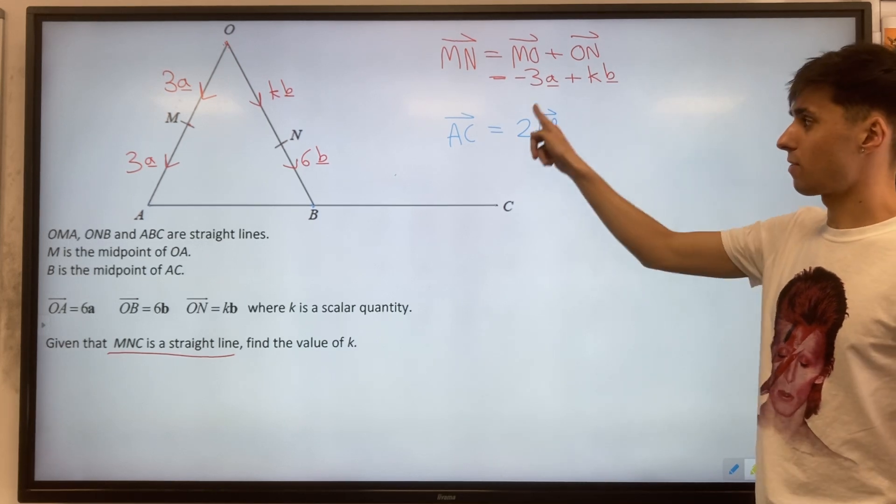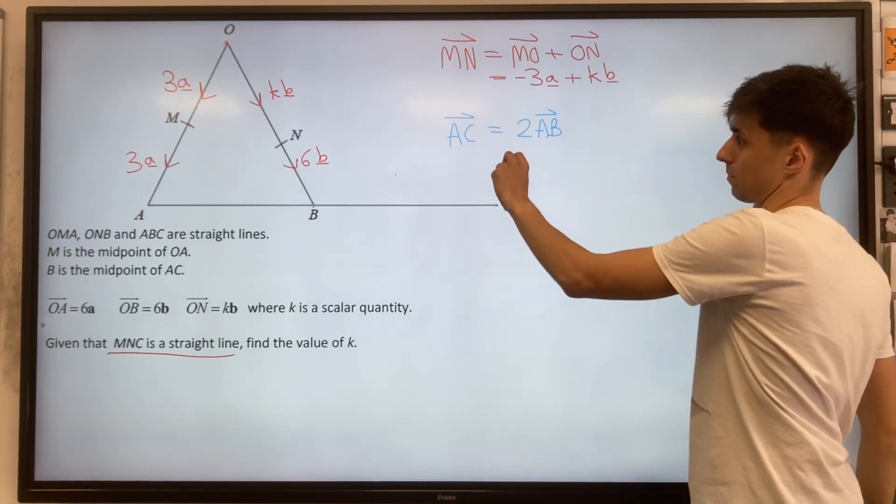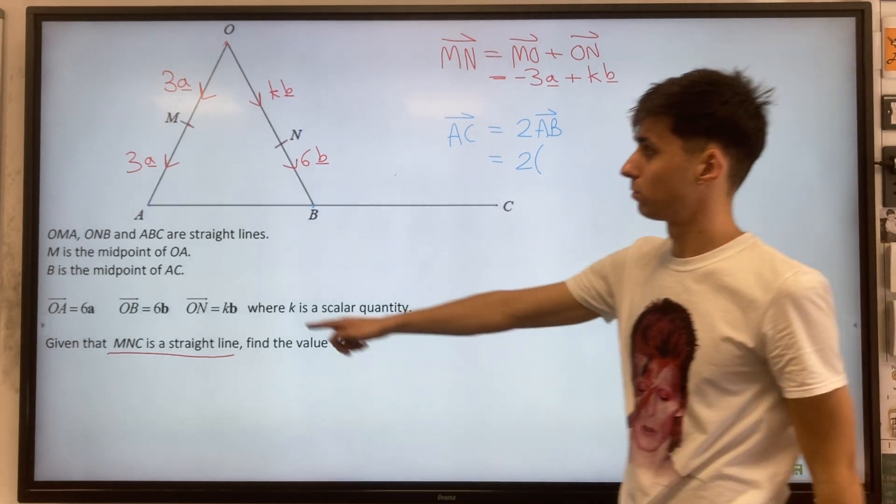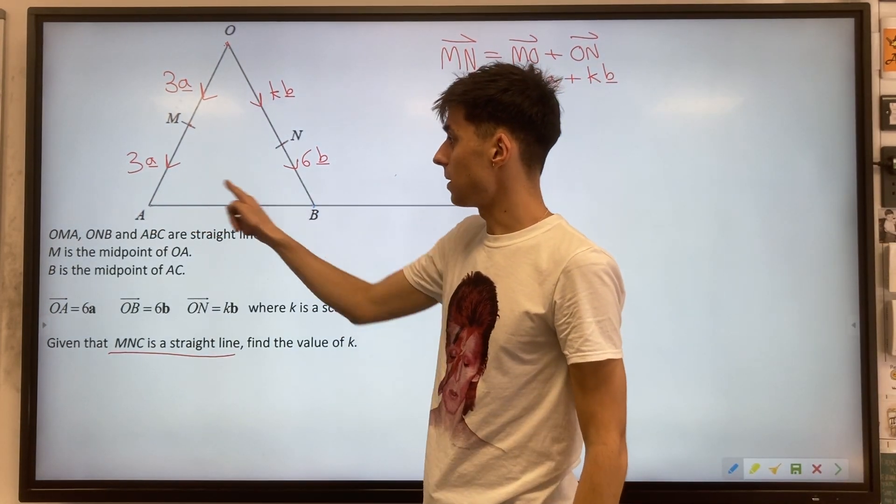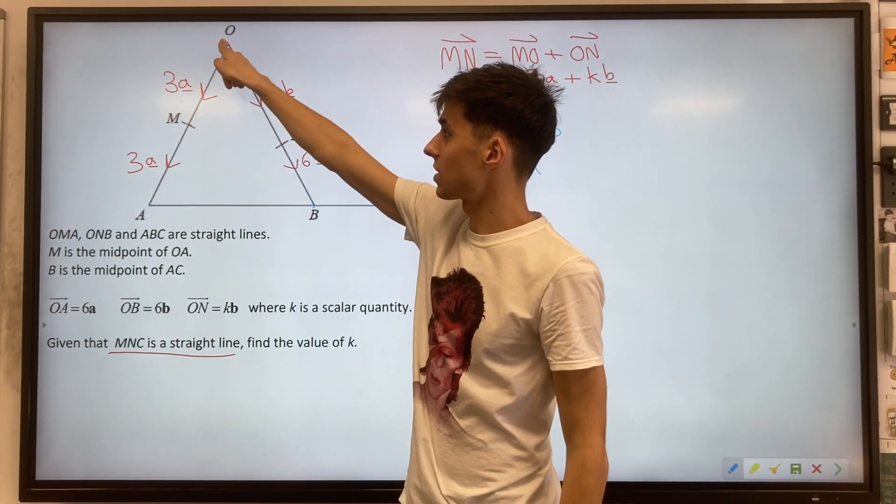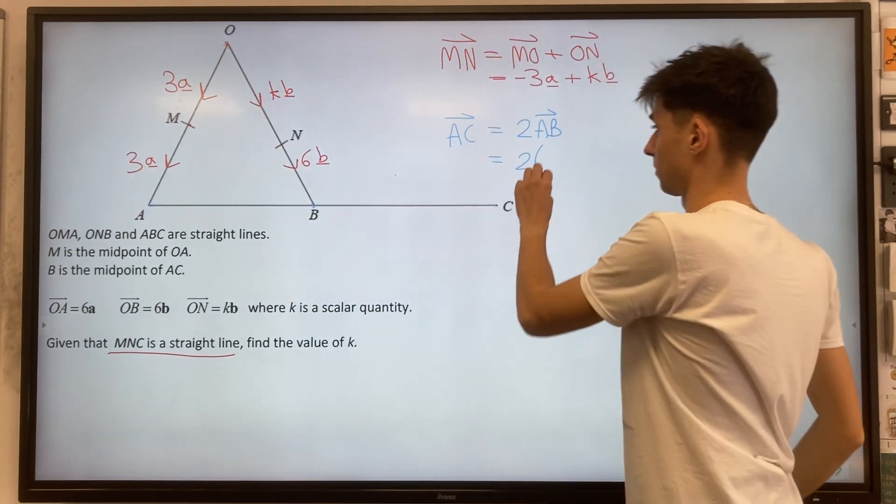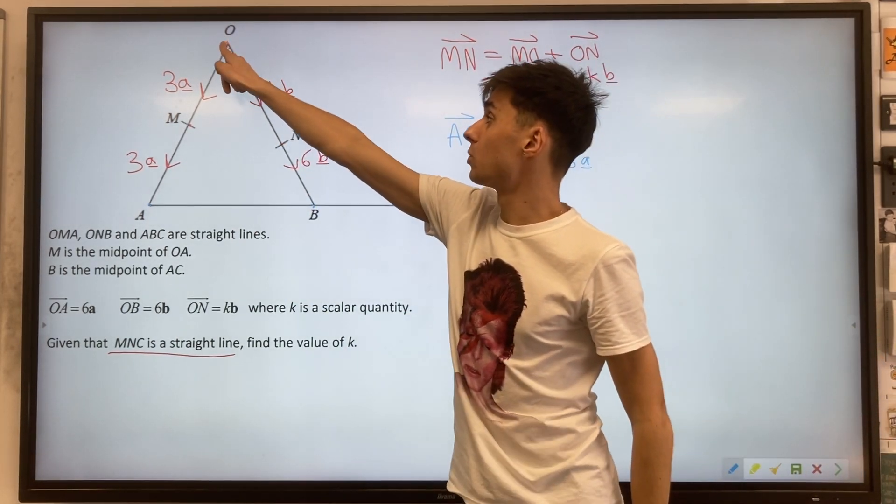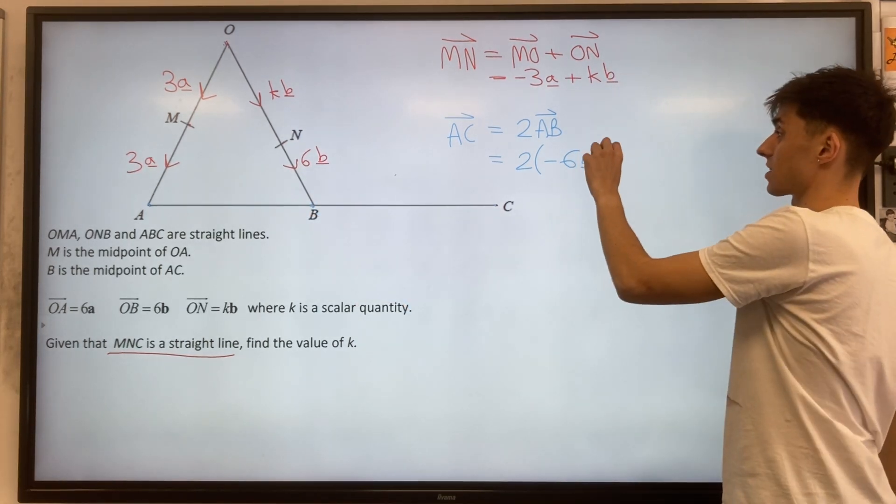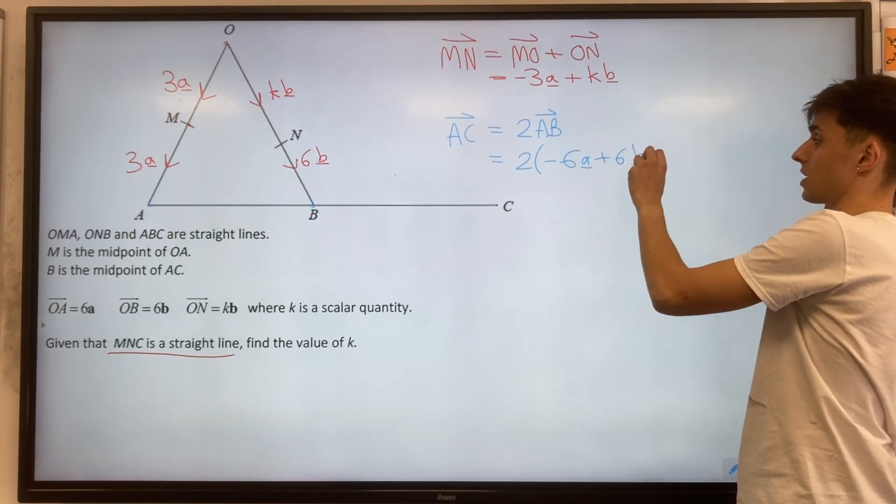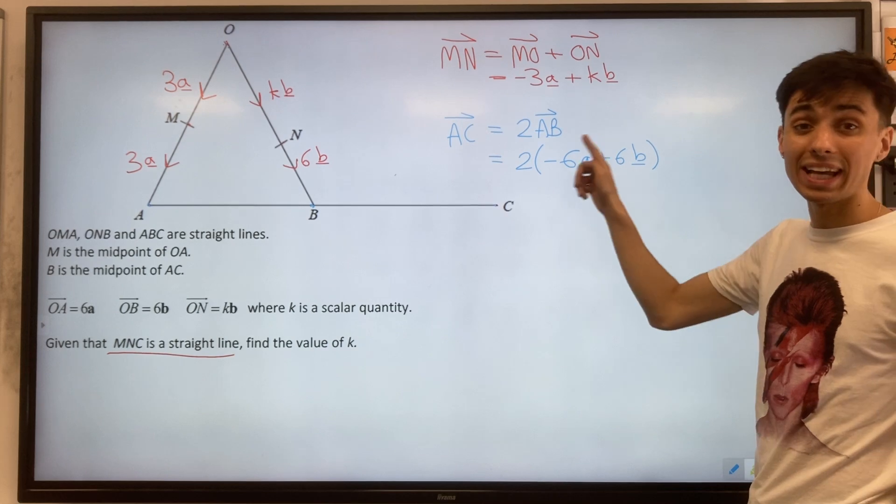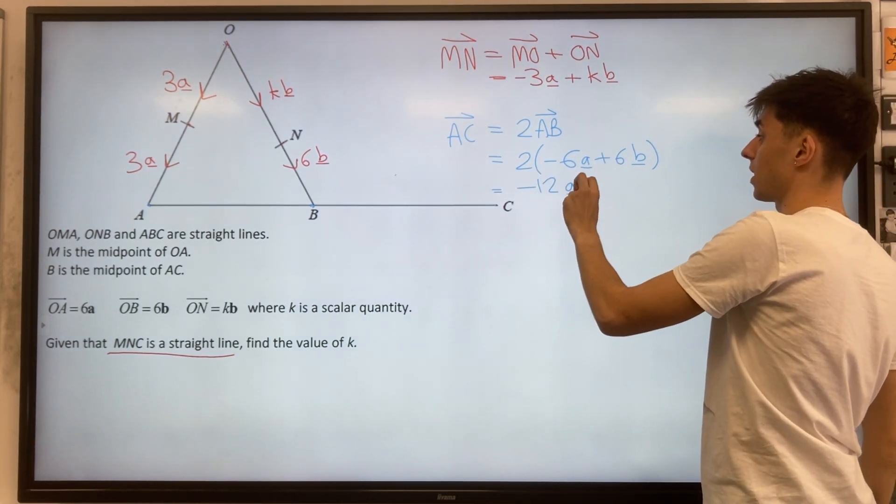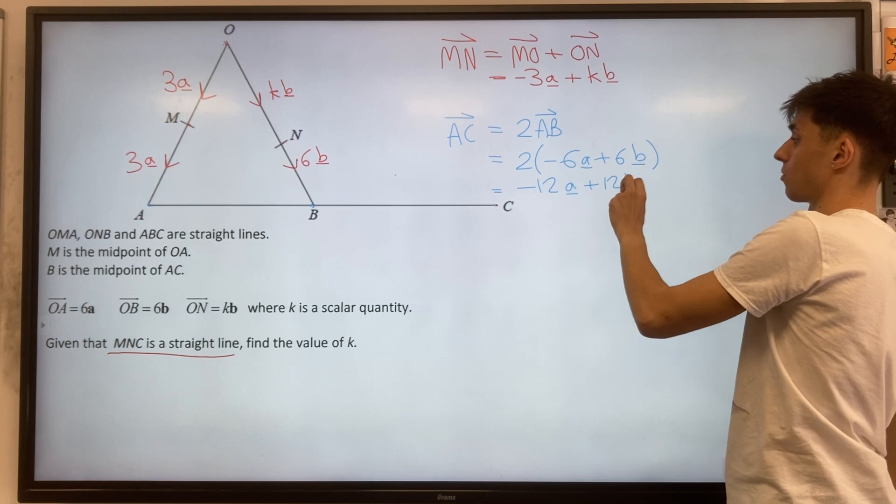So let's first find AB then. Two lots of AB. Well, to go A to B, you can go A to O. So that's minus 6a. And to go from O to B is our 6b. So minus 6a plus 6b. Multiplying out the 2 with the brackets, we'll get minus 12a plus 12b.